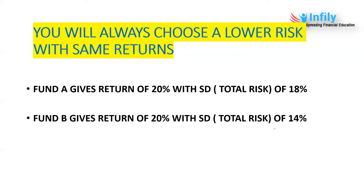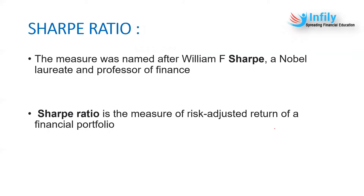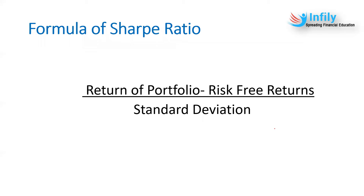Now you must understand why it is very important to analyze risk alongside returns. The Sharpe Ratio was named after William F. Sharpe, a Nobel Laureate, and it measures the risk-adjusted return of a financial portfolio. The formula is: Sharpe Ratio = (Return of Portfolio − Risk-Free Return) ÷ Standard Deviation. We'll now do a practical question analyzing four portfolios — A, B, C, D — and all your doubts will be cleared.